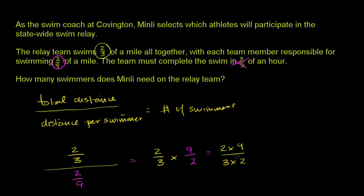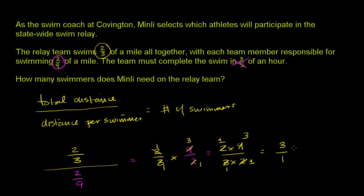We can divide the numerator and the denominator by two — this becomes one and this becomes one. We can also divide the numerator and the denominator by three — this becomes three and this becomes one. We're dividing numerator and denominator by the same thing. Our numerator simplifies to one times three, which is three, and our denominator simplifies to one times one, which is one. So this equals three — three swimmers is what we need.